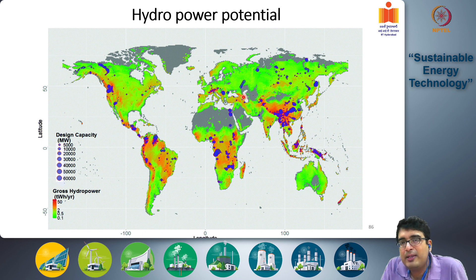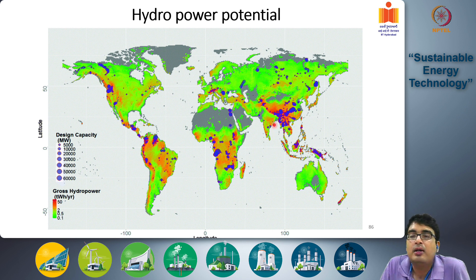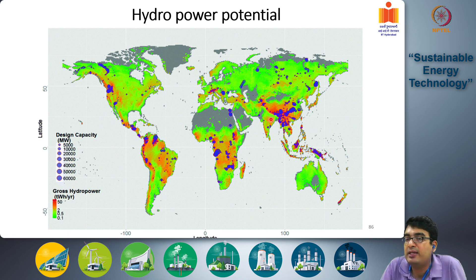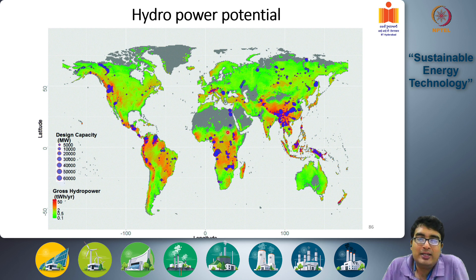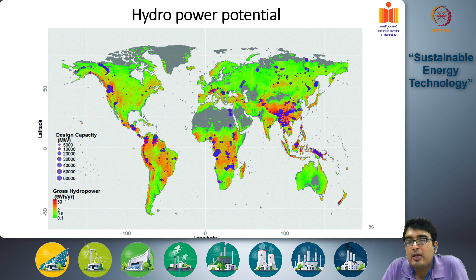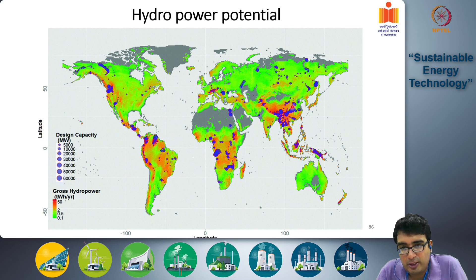In many other places the hydropower potential is not that significant. There is some potential in the central Indian region — Madhya Pradesh, Chhattisgarh, Bihar — where some dams already exist, though not very high capacity ones. What is clear is that hydropower potential is not geographically uniform: there are regions with very high potential and regions with essentially none, reflecting significant geographical differences across different parts of the world.